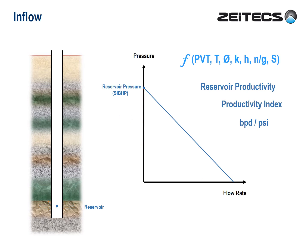I should admit to oversimplifying things just a bit, because when the ambient pressure is reduced below the so-called bubble point pressure of the fluid, liquids and gases separate and they have their own lines. A chap called Vogel had a lot to say about this back in the 60s. But I think you get the message.